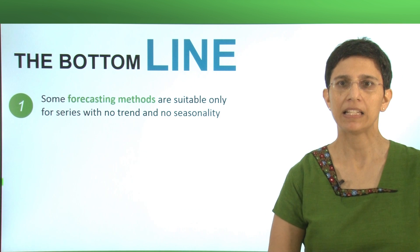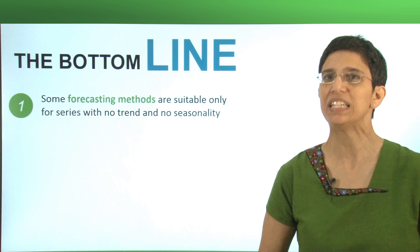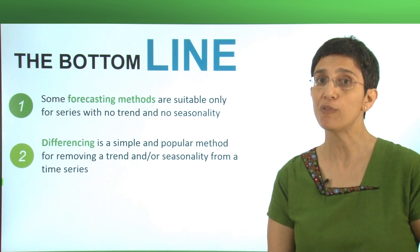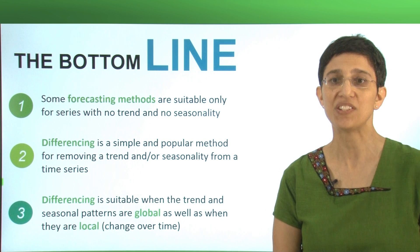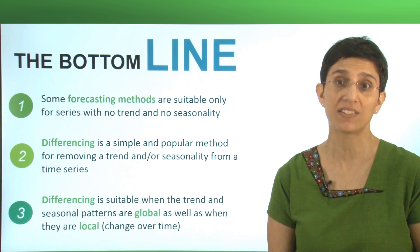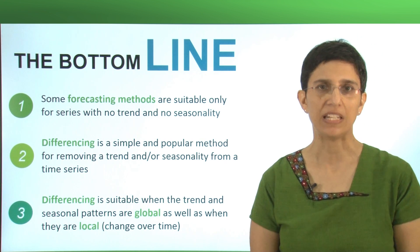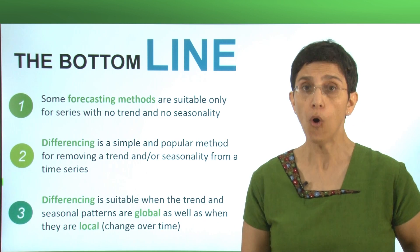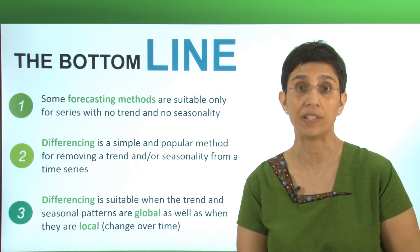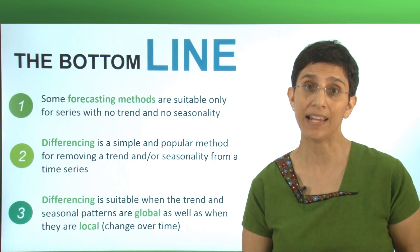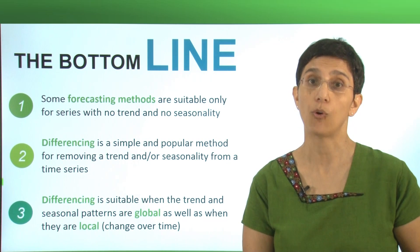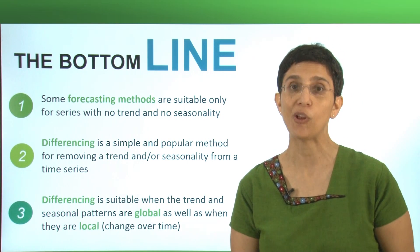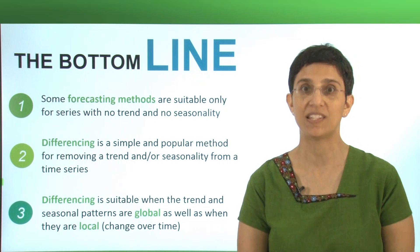The bottom line in differencing is that some forecasting methods can't really deal with trends or seasonality. So we can use differencing as an initial step to remove these patterns, and then use the difference series to forecast with methods such as the moving average. Notice that differencing is useful both when our pattern is global, meaning it extends in the same way throughout the series, or if it's local, if the trend changes throughout the series. Because we're taking local differences, we can handle both types. With this, we finish discussing differencing, but please remember that this is a useful initial step before some of the other methods that we will be discussing soon.